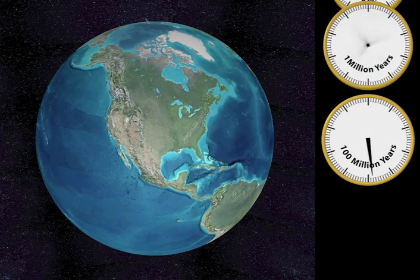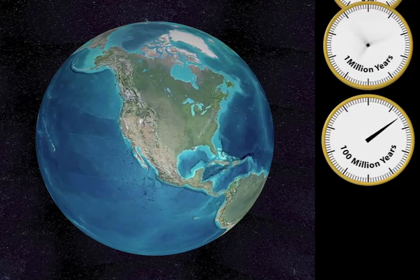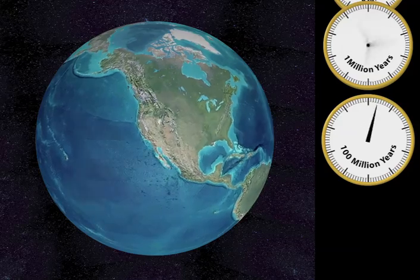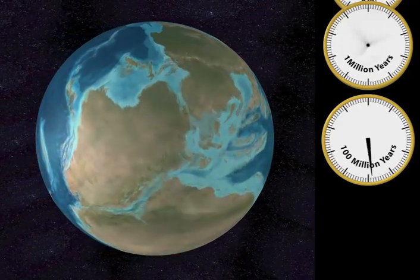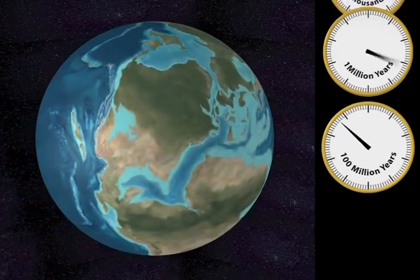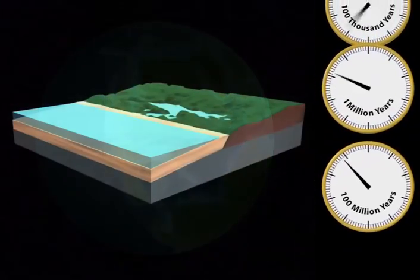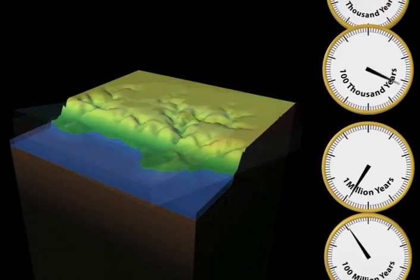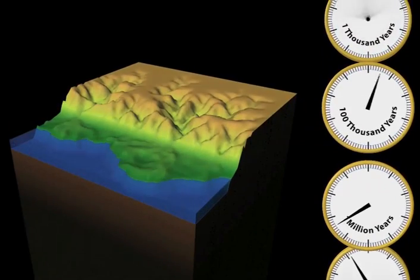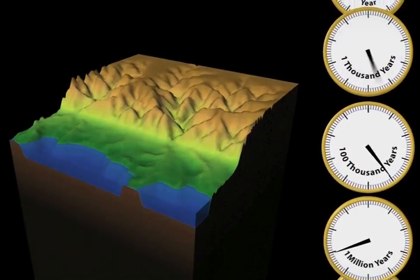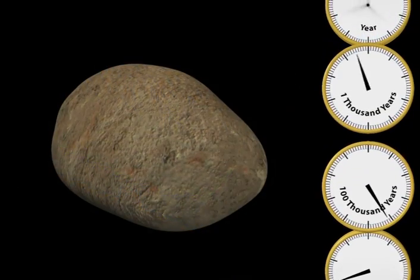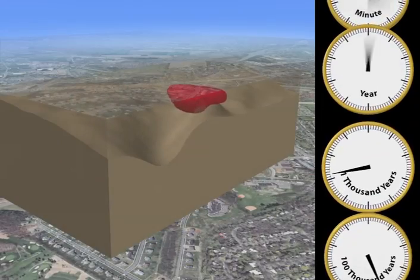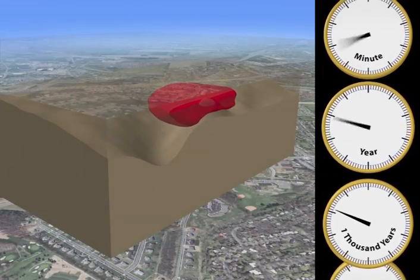We have completed our journey through time. As we move back to normal time, we are reminded of all the things that happen too slowly to notice. Hundreds of millions of years, movement of the Earth's plates. Millions of years, formation of coal beds. Hundreds of thousands of years, the carving of landscapes. Thousands of years, weathering of rocks. Pollution moving through the ground.